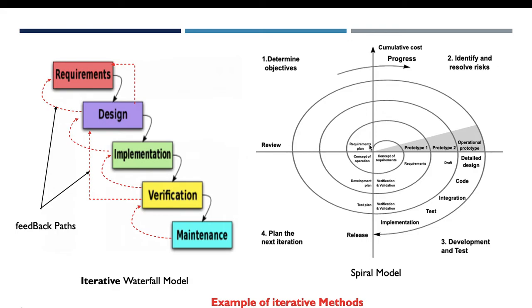Another example of iterative methods is the spiral model. In this model, each iteration goes through four phases: objectives determination, identification and resolving risks, development and testing, and planning the next iteration. At the end of each iteration we have a generated prototype, and this prototype evolves through iterations in order to generate the final release.